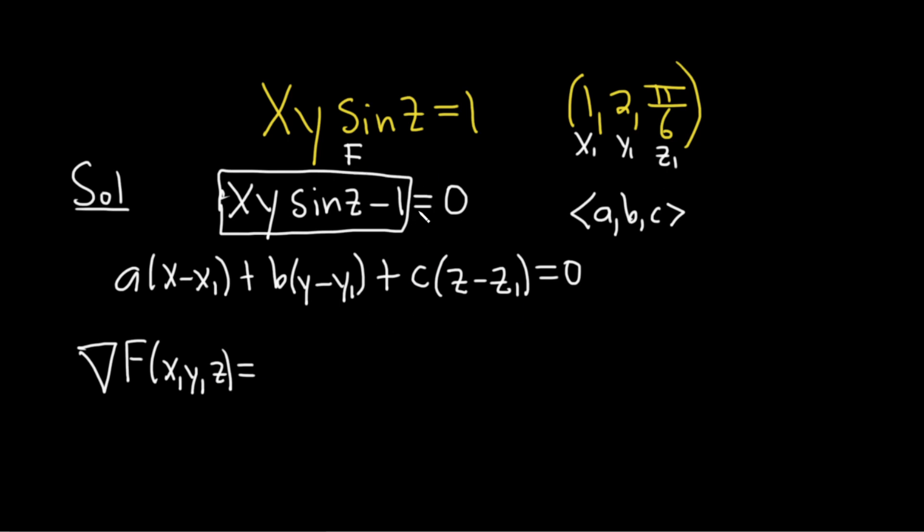So again, for tangent planes, you set it equal to 0 and you want to use this equation. You use your point and then the gradient is going to give you the normal vector.